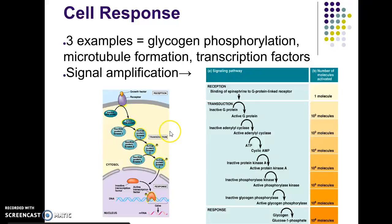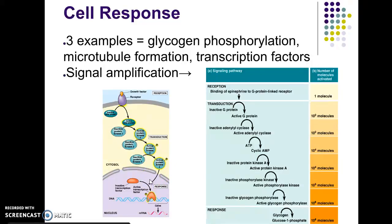The diagram on the left is in your textbook, and it's an example of transcription factors. In this particular example, you have your initial signaling molecule, which is your growth factor, binding to a receptor protein, which then triggers this phosphorylation cascade. The last kinase in the sequence — in this case active protein kinase 3 — will enter the nucleus and activate a gene-regulating protein, otherwise called a transcription factor.